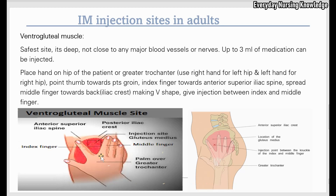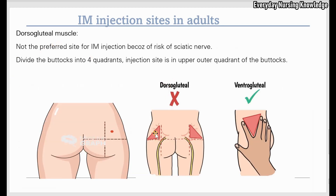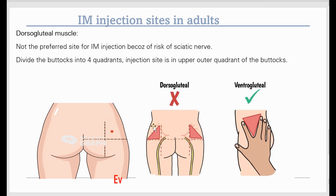The fourth site is the dorsogluteal muscle. This is not the preferred site of injection because the sciatic nerve is located close to the injection site and injury can occur when giving an intramuscular injection. To find the site, divide the buttocks into four quadrants — the injection site is the upper outer quadrant of the buttock.